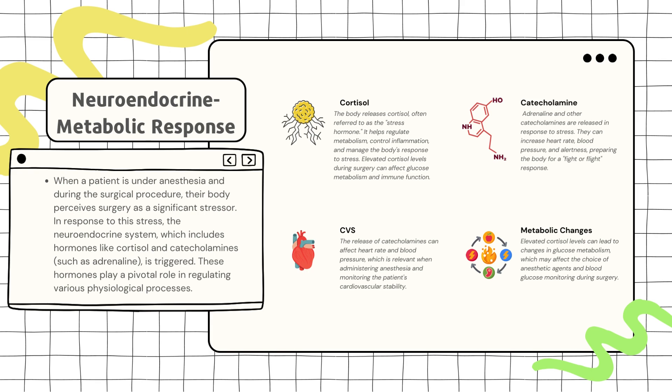Understanding the neuroendocrine metabolic response is crucial because it can impact patient care in several ways. First, the release of catecholamines can affect heart rate and blood pressure, which is relevant when administering anesthesia and monitoring the patient's cardiovascular stability.